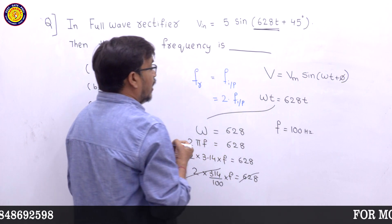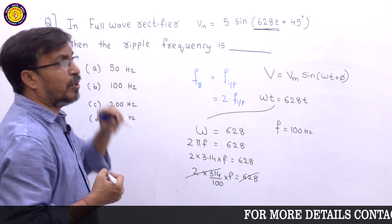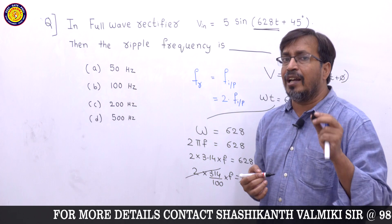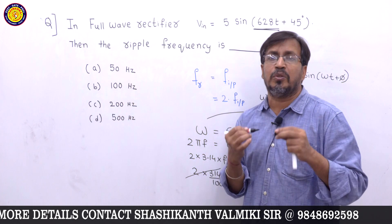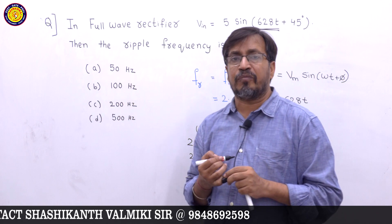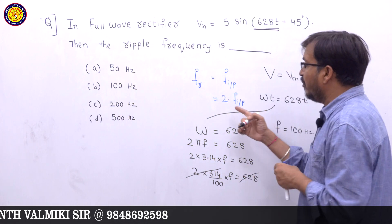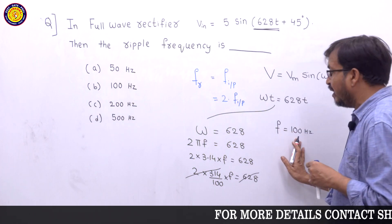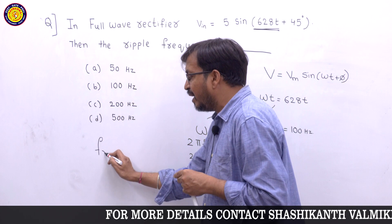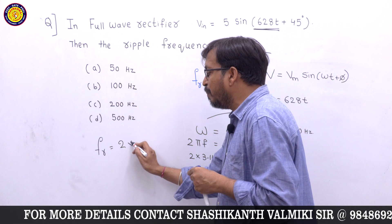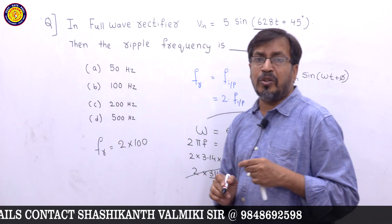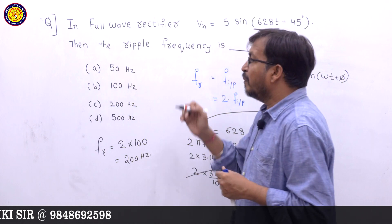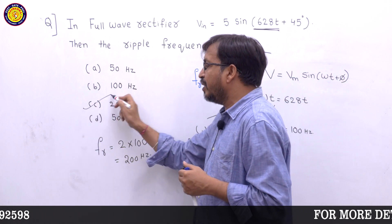The input frequency is 100 Hz. Since this is a full wave rectifier, the ripple frequency formula is: ripple frequency = 2 × input frequency = 2 × 100 = 200 Hz. So the answer is option C: 200 Hz.